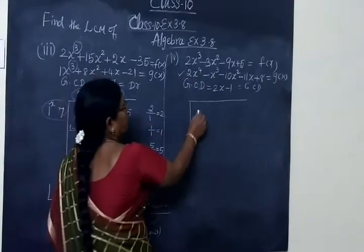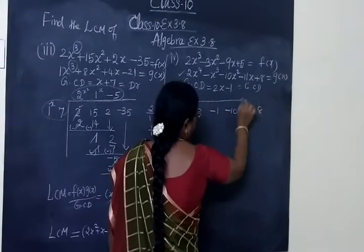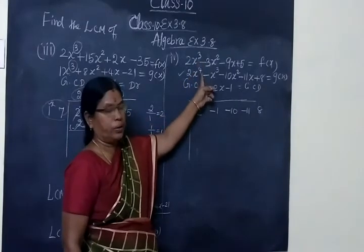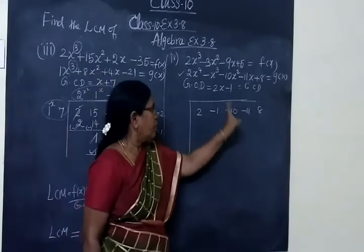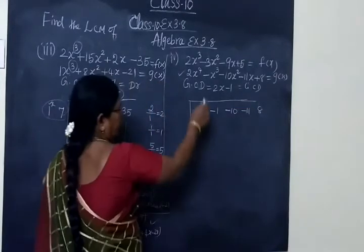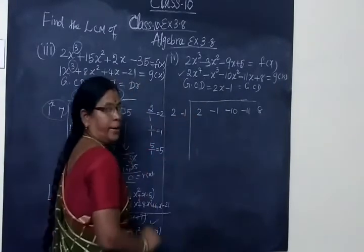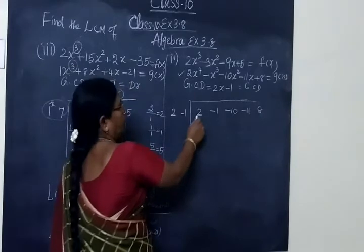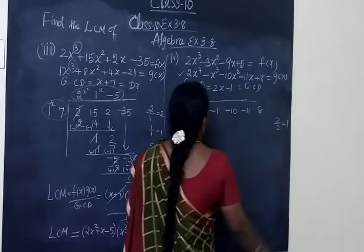Now we are taking G of X because it has the highest power — degree 4. So the polynomial has degree 4, with coefficients: 2, minus 1, minus 10, minus 11, 8. The GCD coefficient gives us: minus 2 equals minus 1, minus 1, minus 10, minus 11, 8. Then GCD of 2 gives coefficient 2 and 1. This is equal to minus 1. So 1 and minus 1 gives plus 1, making the result minus 1.